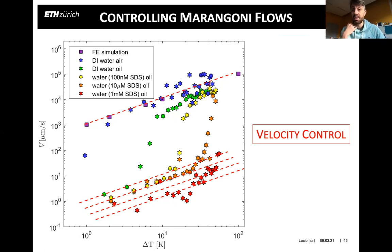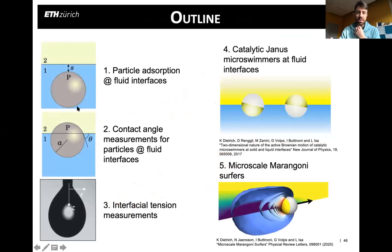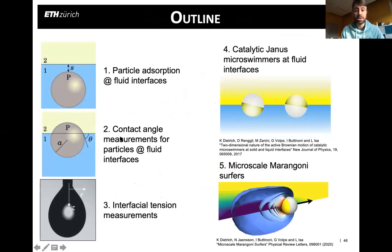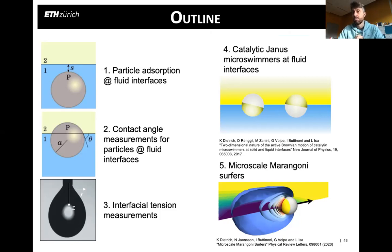In summary, this lecture covered general concepts about particle adsorption at interfaces, why particles go to an interface, the implication of surface heterogeneity for orientation and adsorption, and methods to measure contact angles and interfacial tension. We then connected these concepts to catalytic swimmers at interfaces compared to the bulk benchmark, and showed opportunities that interfaces offer for propulsion via surface tension gradients.